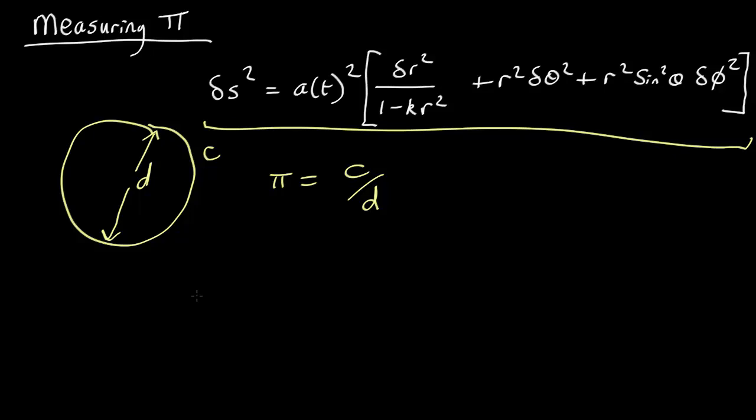So let's pick a circle of all the points where r equals r naught. And let's vary just theta. So we'll move around in theta and we'll assume that phi is zero throughout.